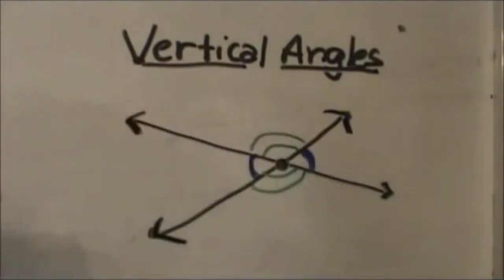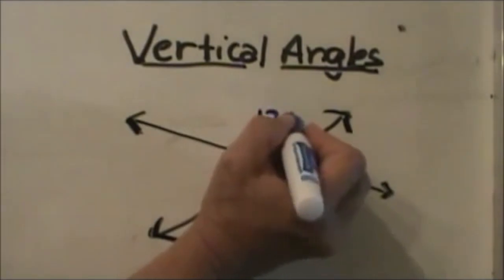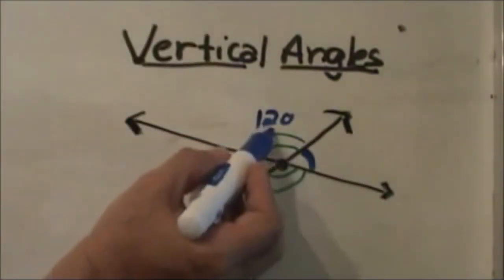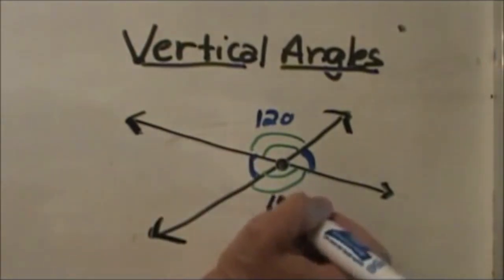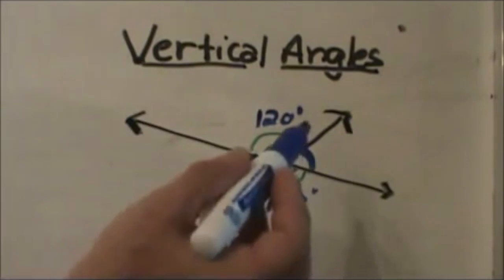So these two blue angles are congruent and these two green angles are congruent. Now I'm going to throw some numbers in there. What if I make this angle 120 degrees? Can I figure out the rest? Yes, I can. If this one is 120 degrees, we know this one has to be 120 also because they're vertical angles.